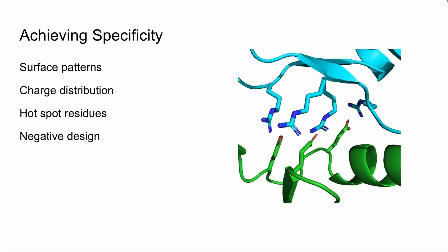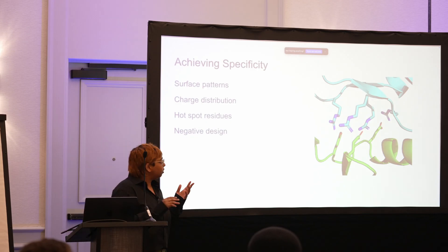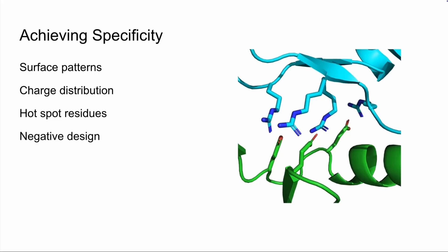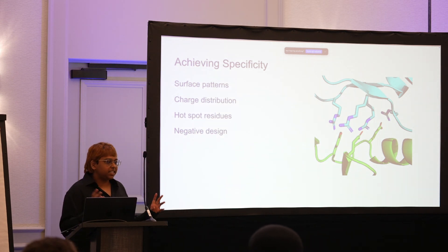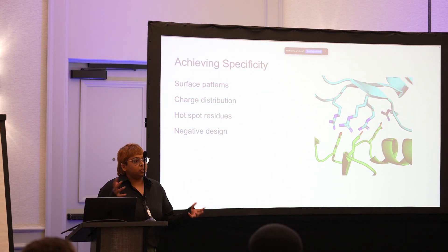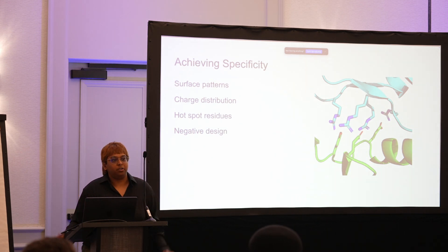You can also think about positive and negative design here. So one approach is to design positively for specific interaction while also modeling the interaction that you don't want to have and designing away from that. There's multiple approaches to doing that. I think we'll talk more about this tomorrow in more specifics, but just something to keep in mind. Also be thinking about what you don't want while you're thinking about what you do want.